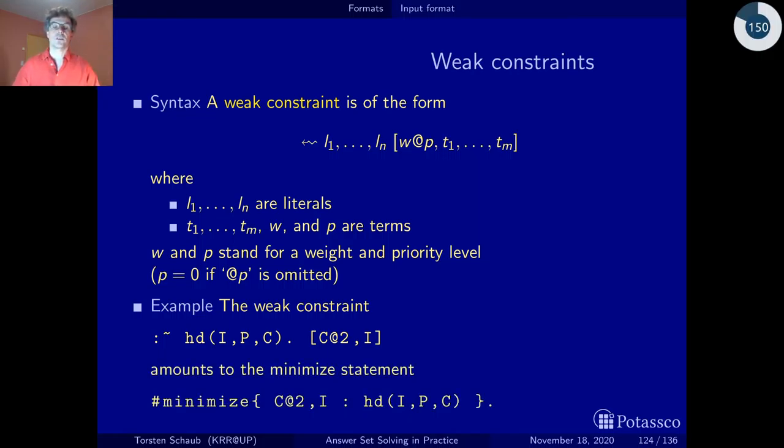In the same way, one can do this with minimize statements, and they're actually equivalent. As I said in the optimization section, whenever you have several weak constraints of this form, they can be gathered together by one minimize statement. When I say several, this means the instantiation, the ground form of these guys. If you write this in first-order form, this line corresponds to this line.